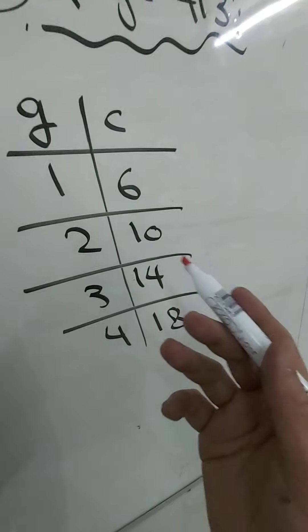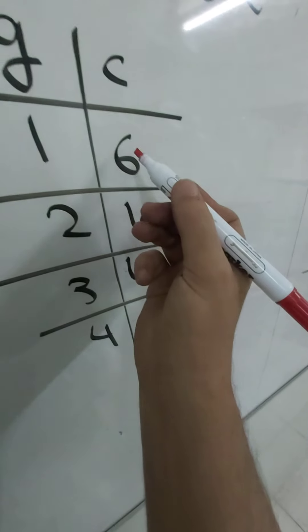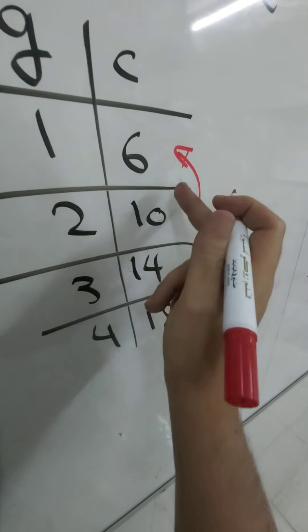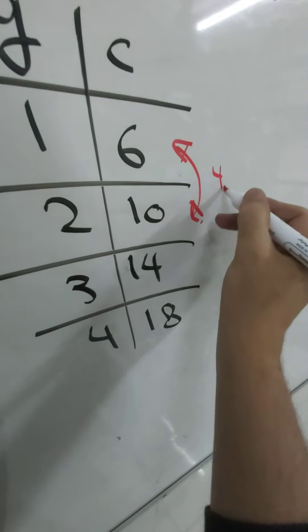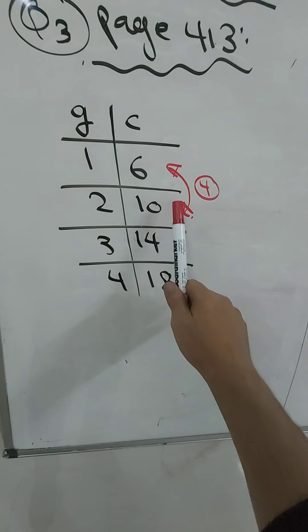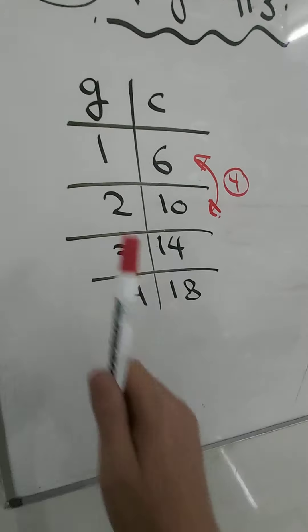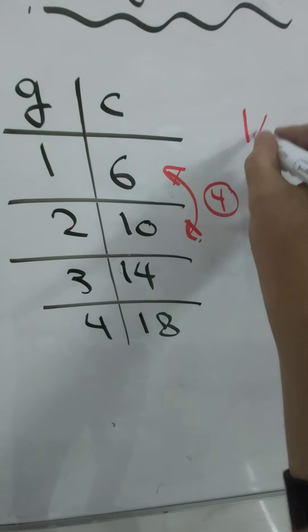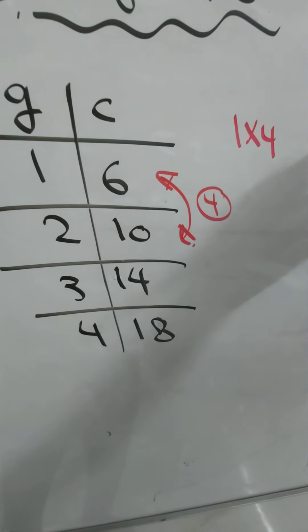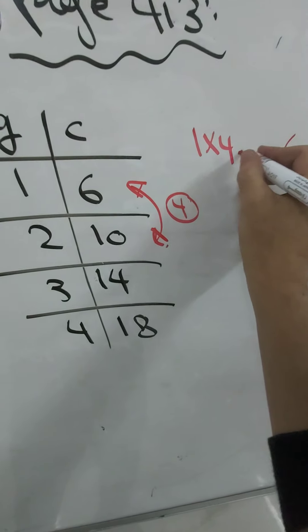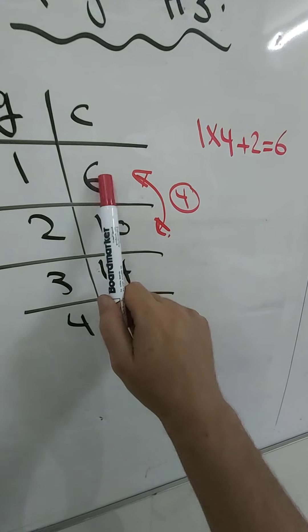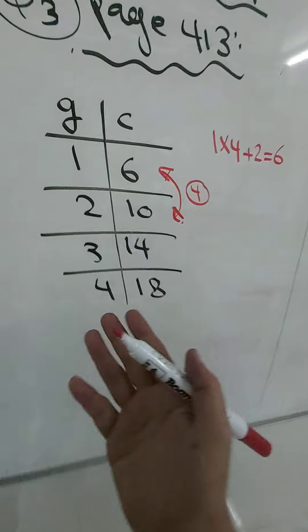So here, what we'll do is I will go to the first two numbers here and I will find the subtraction of them. Ten minus six is four. Now, one multiply four is four. How much does it need to be six? To be six it needs two. So one multiply four plus two equals six.